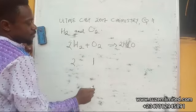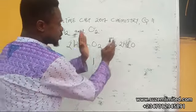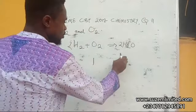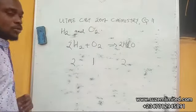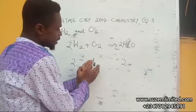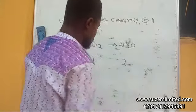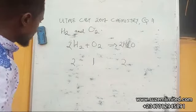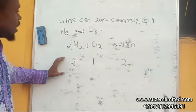And when you relate it to the product, it becomes a ratio of two. So reactants are in ratio of two is to one and is to two, which is the product. This is the ratio now.